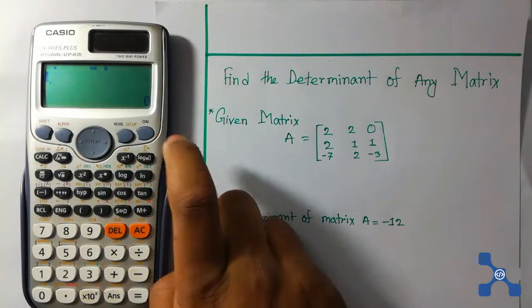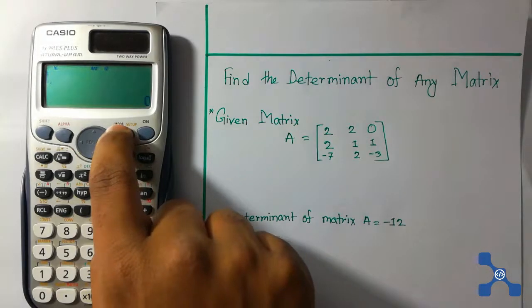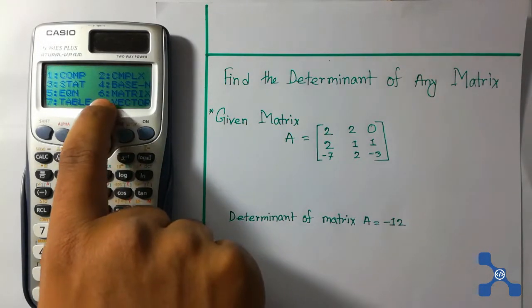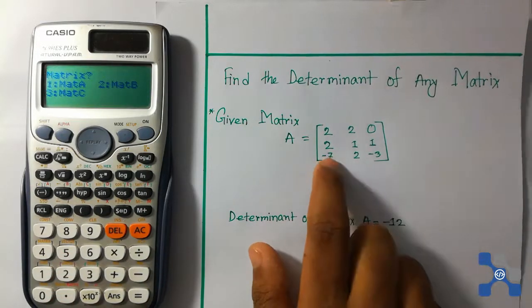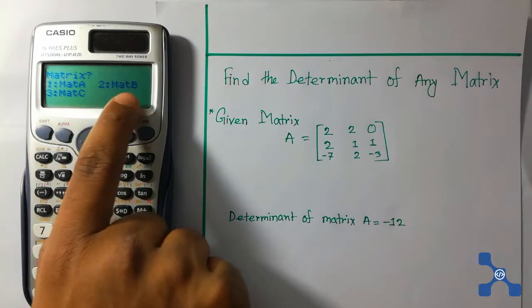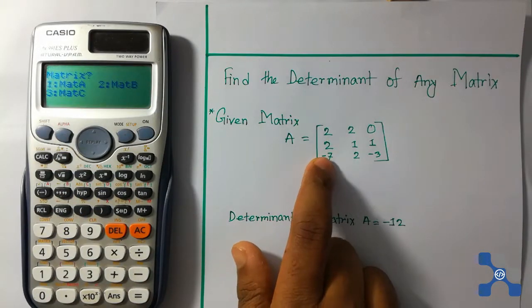Power on this calculator, press the on button, and now press mode button. Then press 6 because 6 is for matrix. We load this matrix on any one of these: mat A, mat B, or mat C. I'll load this matrix on mat A.